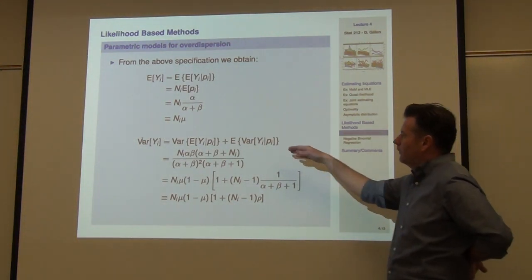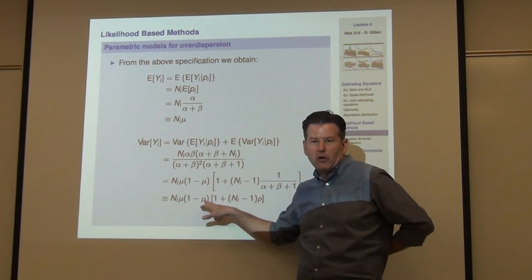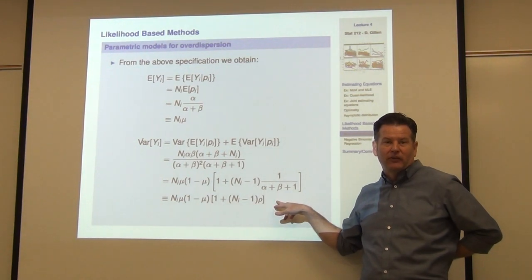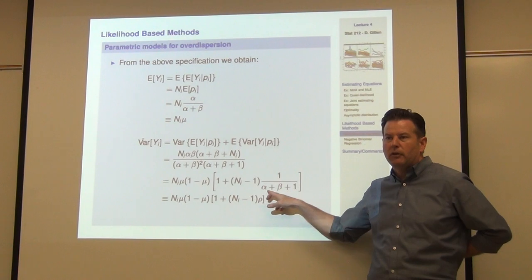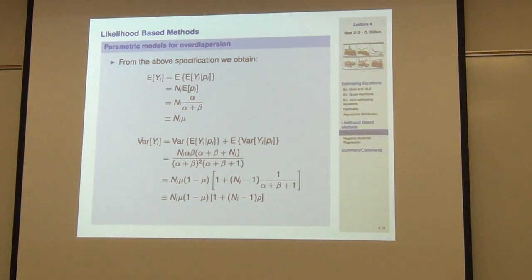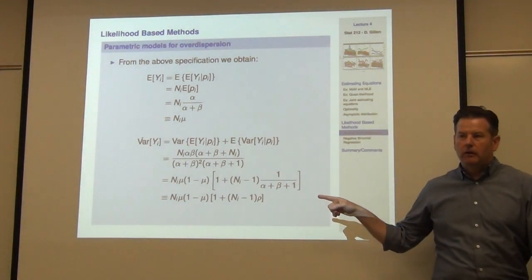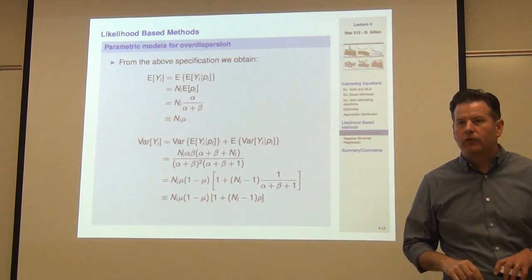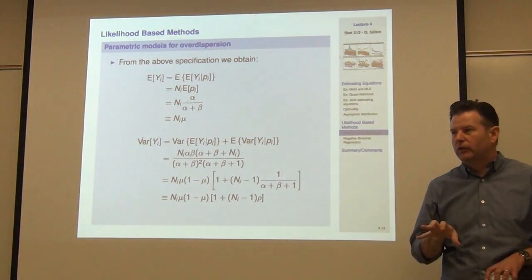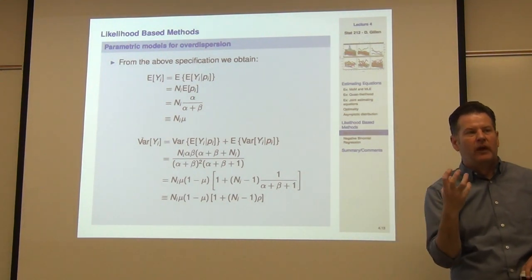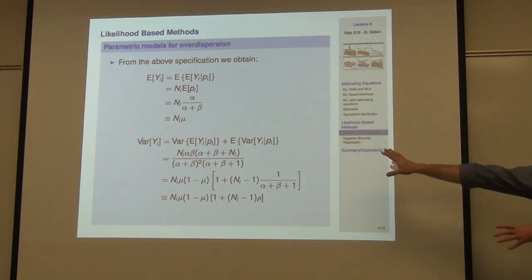If you look at the marginal variance of Y, you get something that looks like n times mu times (1 minus mu) — the good old binomial variance — times (1 plus (n_i minus 1) times rho). That's exactly what we had derived last time, where I had this common correlation rho. It turns out that rho, when you do it from the beta binomial perspective, is a function of alpha and beta. Something to note: in the beta distribution, alpha and beta must be positive, so this model — approached from a full likelihood perspective — always assumes a positive correlation. It does not allow for a negative correlation.